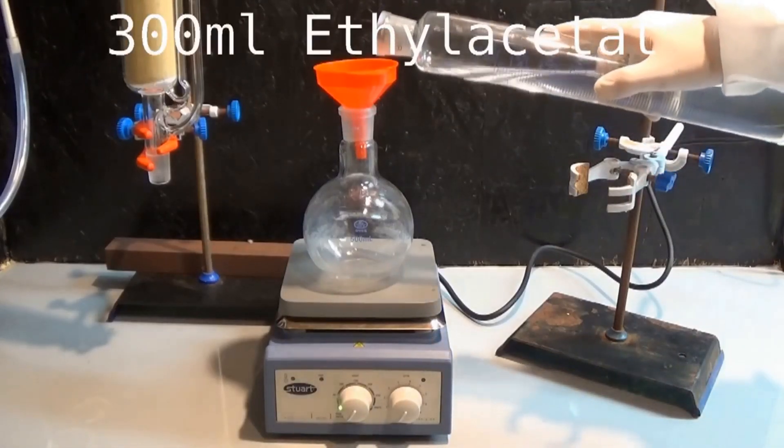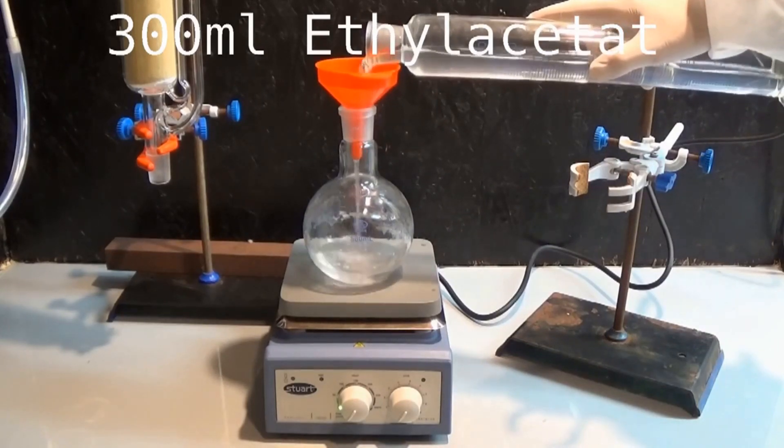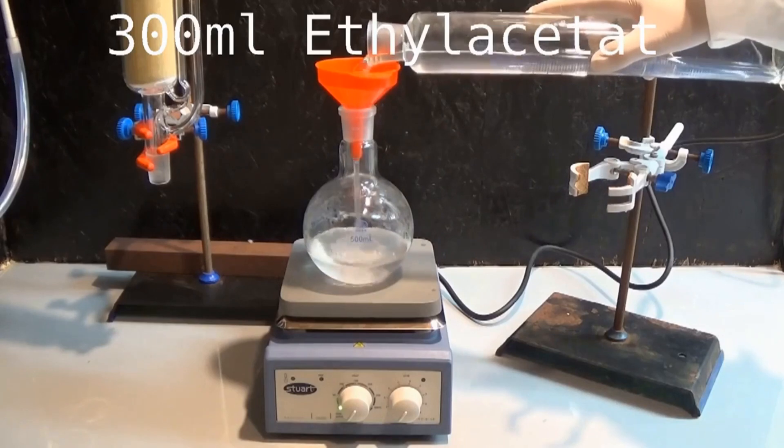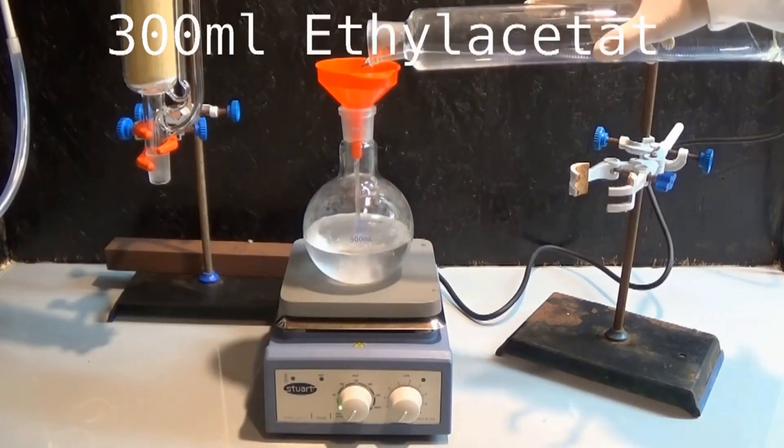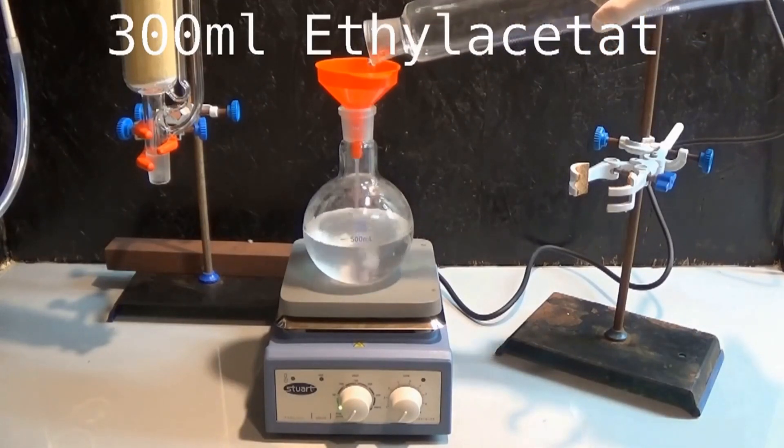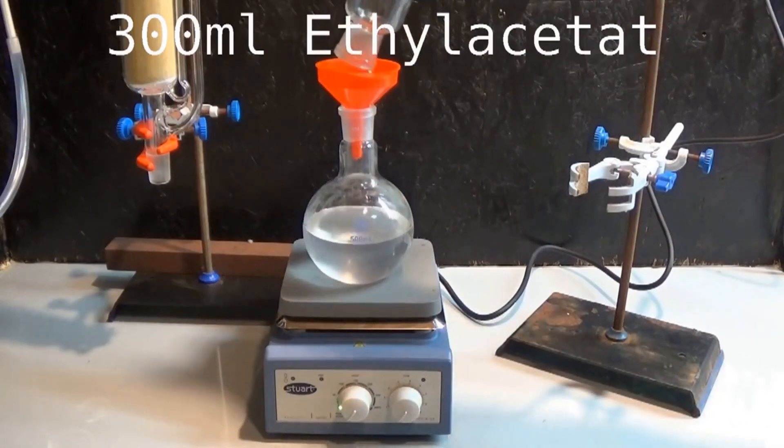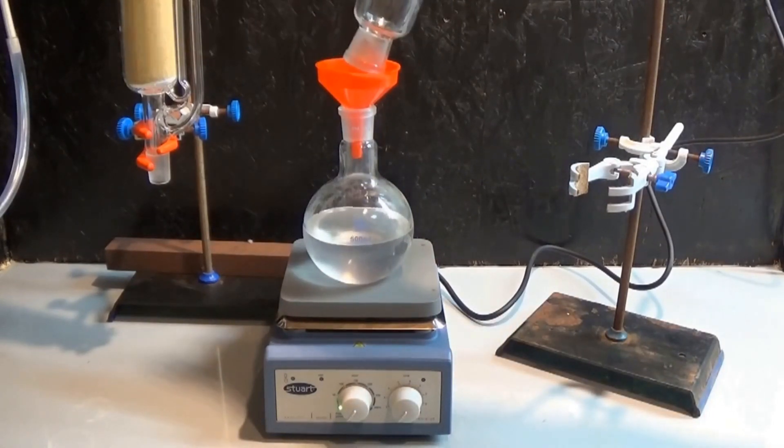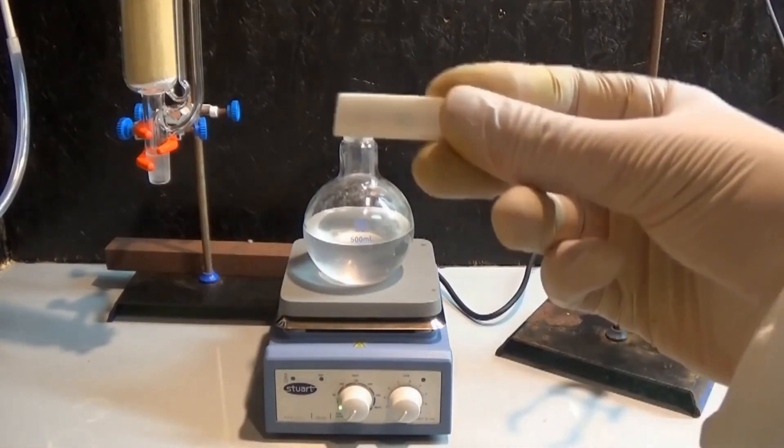As solvent, I chose ethyl acetate because it can be easily distilled from nail polish remover. The used ethyl acetate was pre-dried using three angstrom molecular sieves to get rid of any remaining water. 300 milliliters of dry ethyl acetate are added to the boiling flask, followed by a magnetic stir bar. Afterwards, the apparatus is assembled and connected to the cooling water.